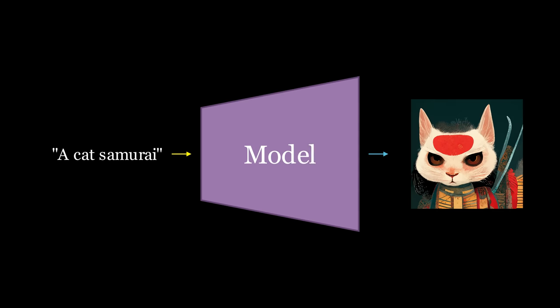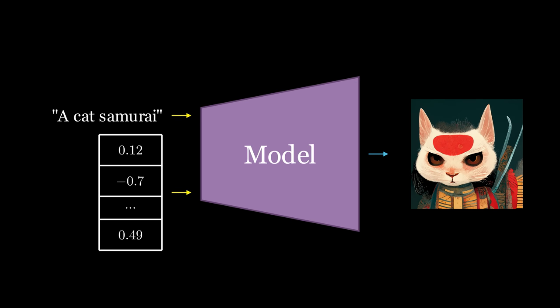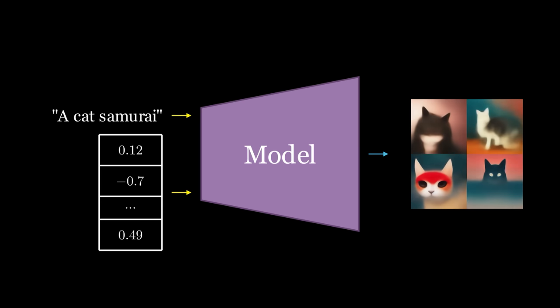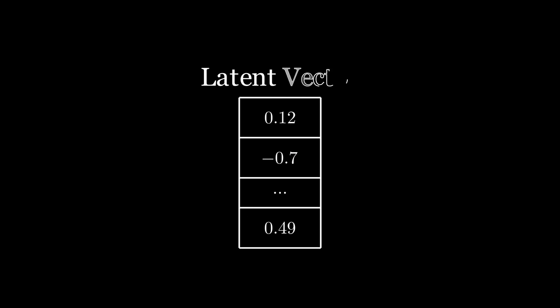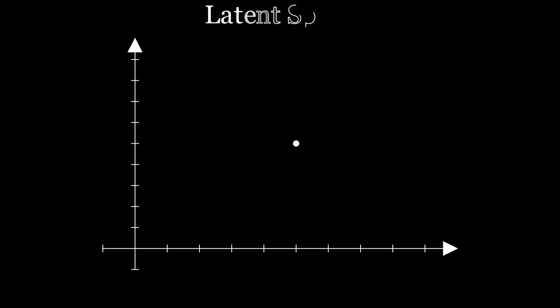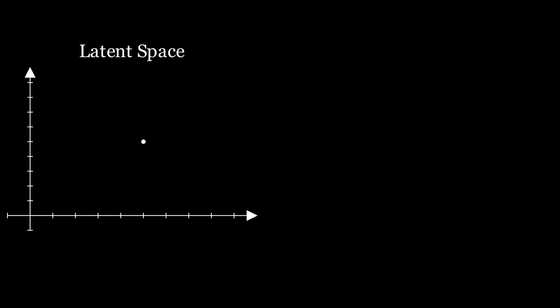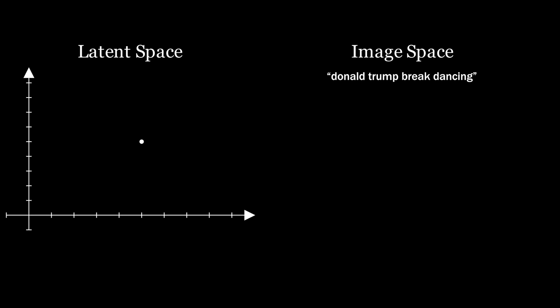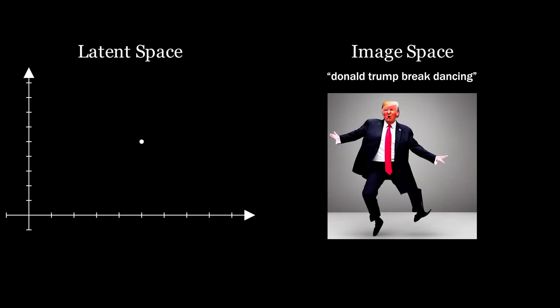However, text is not the only input to the model. We also give it a bunch of random numbers, which give the model variety, such that it won't always produce the same image for the same prompt. These random values make up the latent vector, which occupies a single point in its own space, a latent space. When a particular latent vector and prompt are fed to the model, it outputs an image specific to that input. You can think of the latent vector as the coordinates on a map that point to a corresponding image.